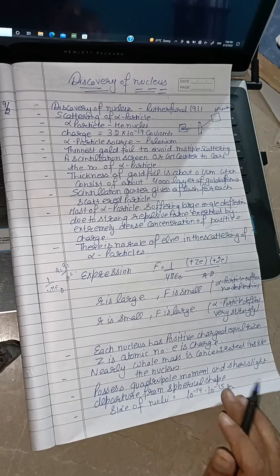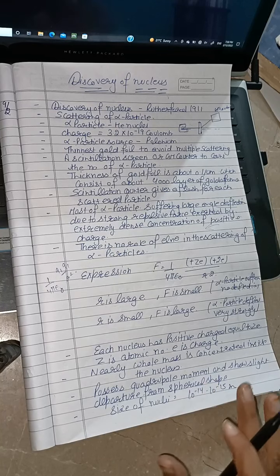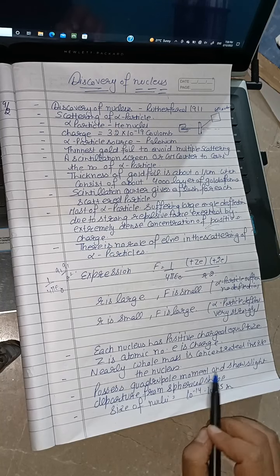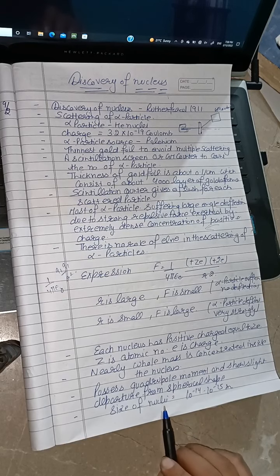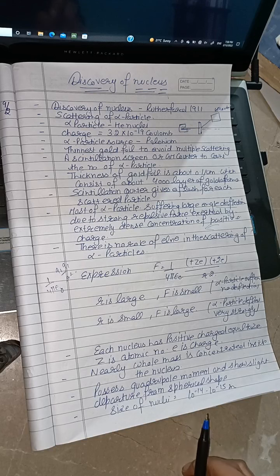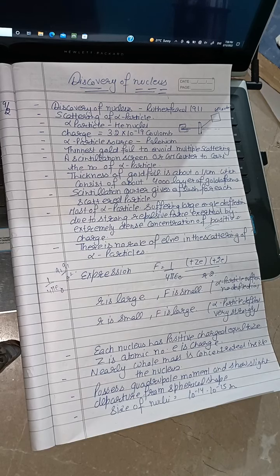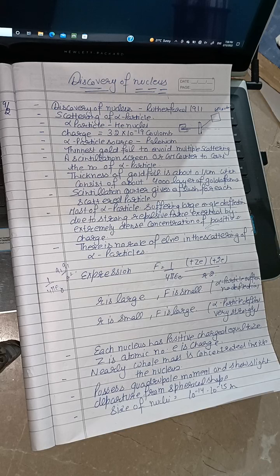We assume the nucleus is spherical in shape, but sometimes it shows non-spherical shapes as well. The size of the nucleus is 10 to the minus 14 to 10 to the minus 15 meters. So this is all about the discovery of nucleus by Rutherford in 1911.